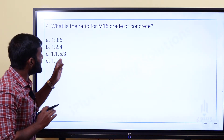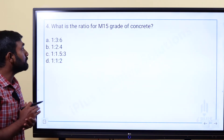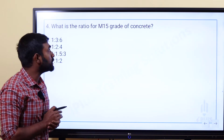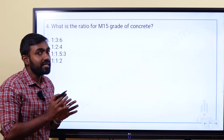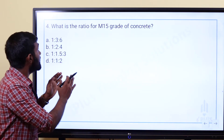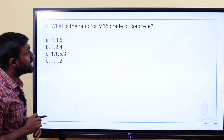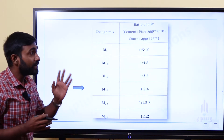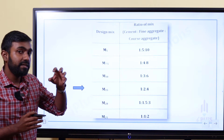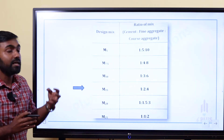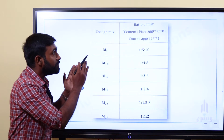Next question: What is the ratio for M15 grade of concrete, considering cement, fine aggregate, and coarse aggregate?